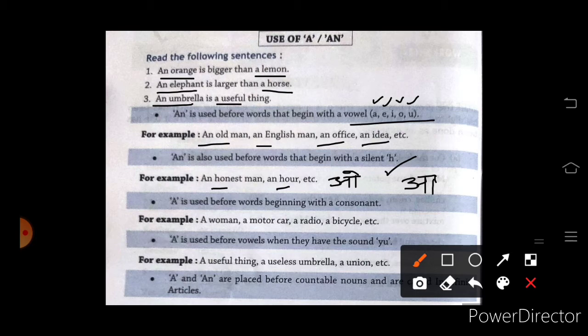Next one, A is used before words beginning with a consonant. Agar consonant se start hai, then we have to use A before that word. A woman, a motor car, a radio, a bicycle, etc.